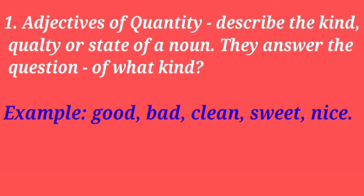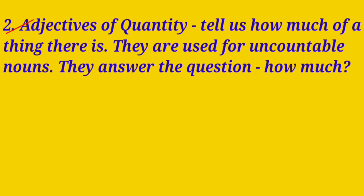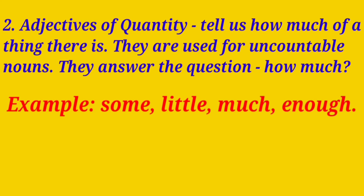The second kind is adjectives of quantity. These tell us how much of a thing there is. They are used for uncountable nouns and answer the question 'how much.' These are measuring words that tell us about the quantity of uncountable nouns. Examples: some, little, much, enough. In sentences: 'They have little knowledge about this book,' 'Please give me some coffee,' 'Rena spends much money,' 'They have enough money to spend.'